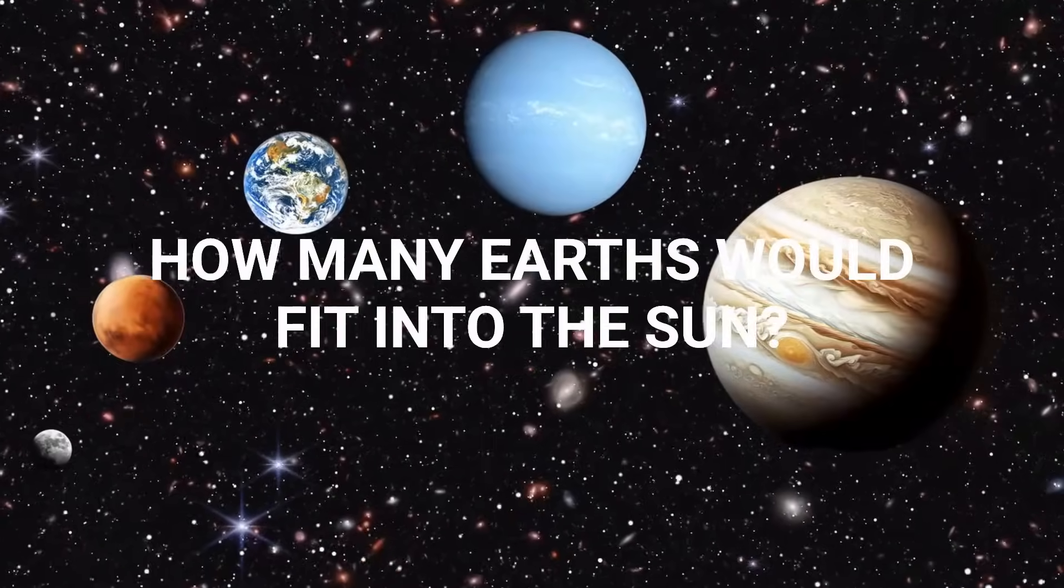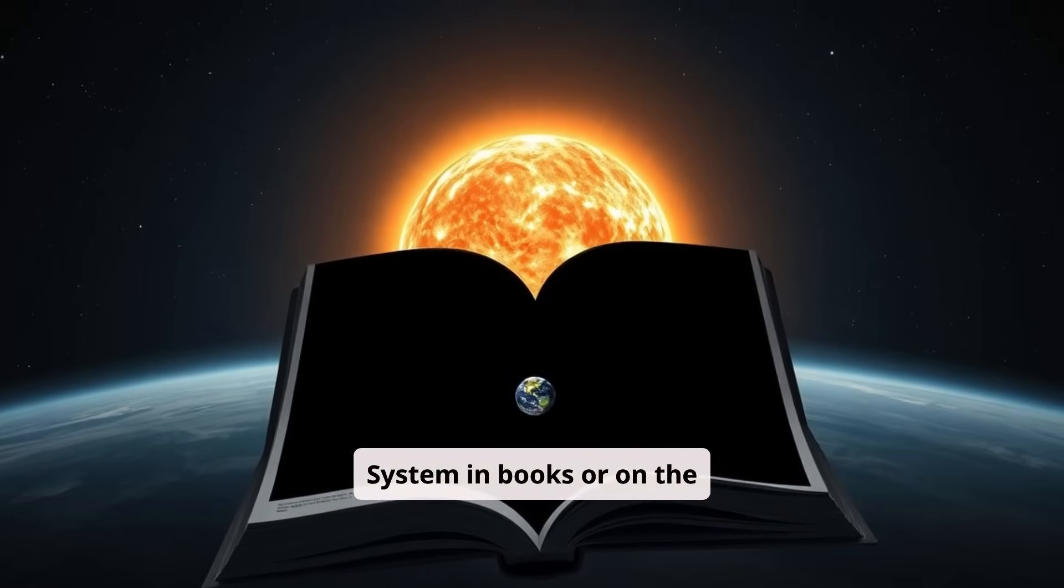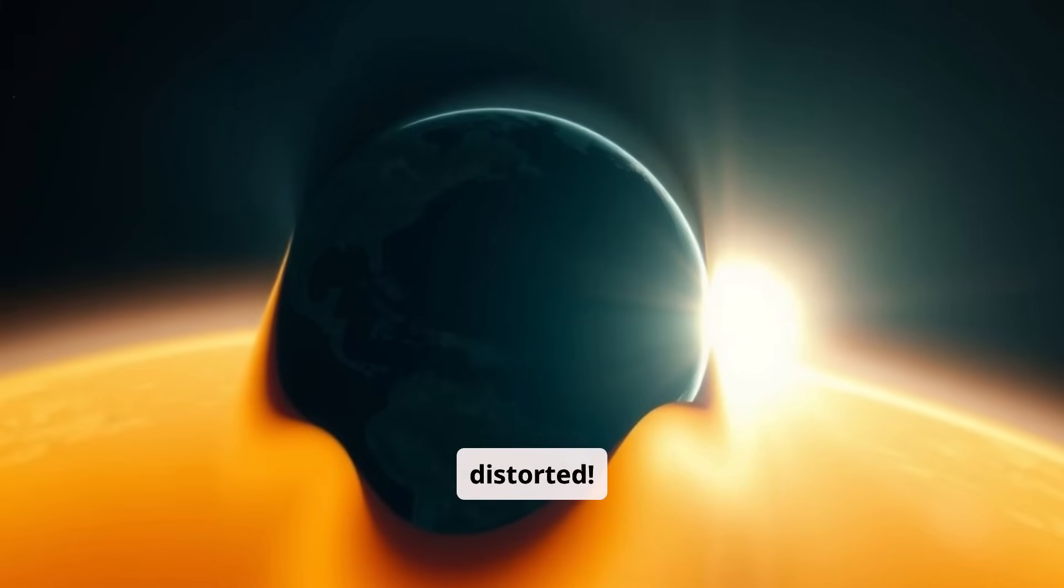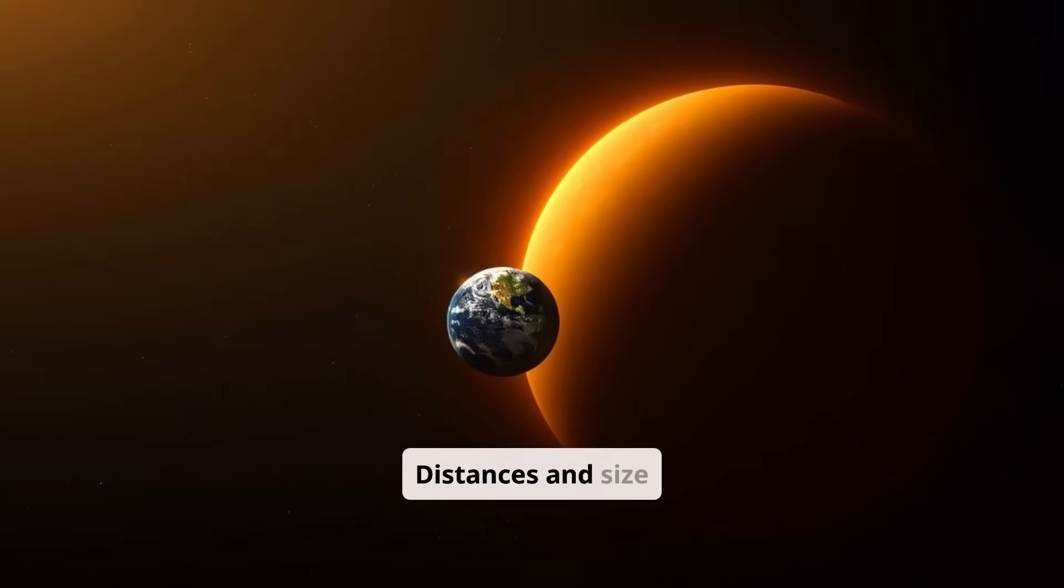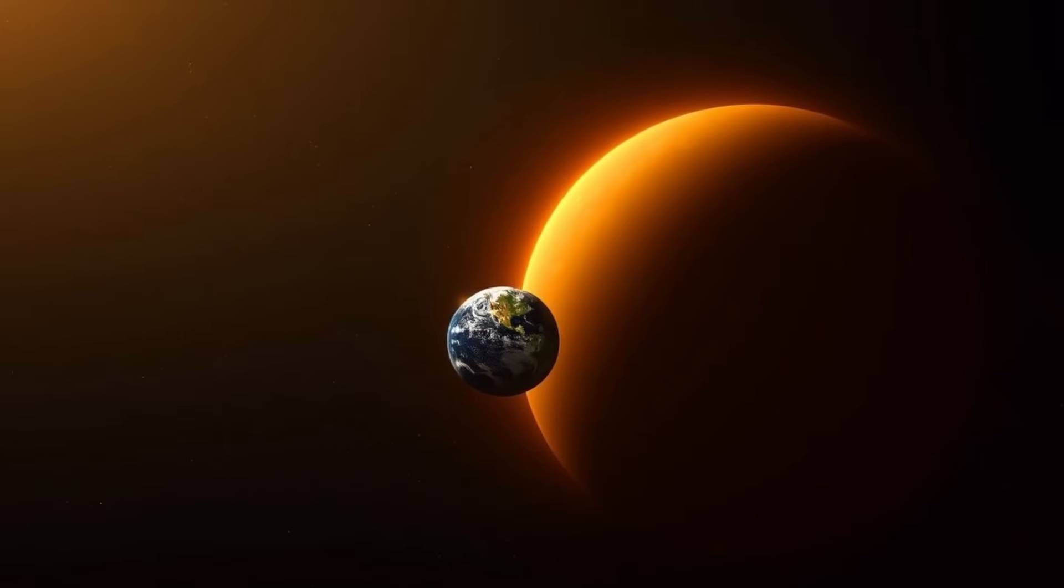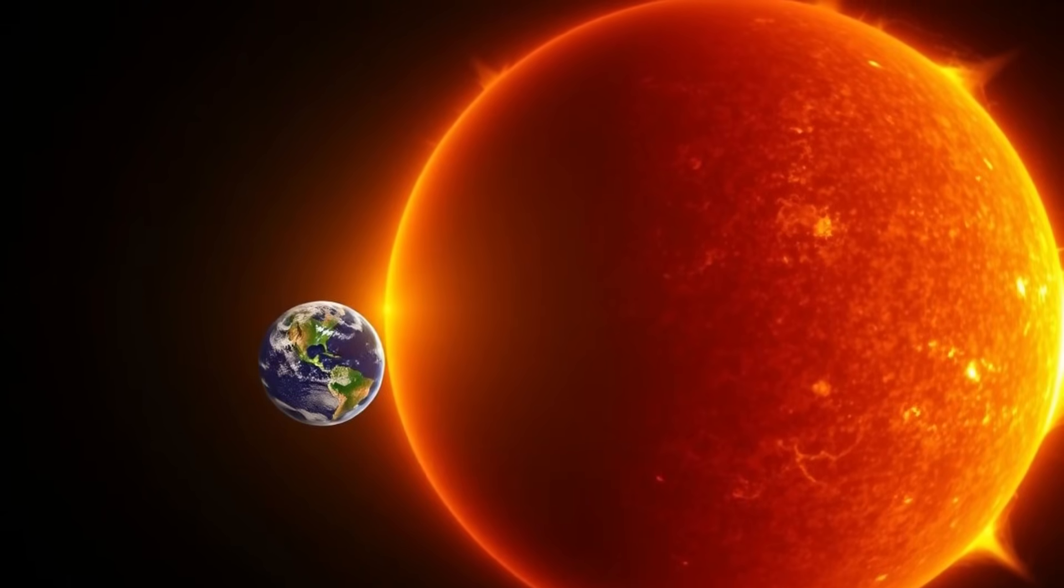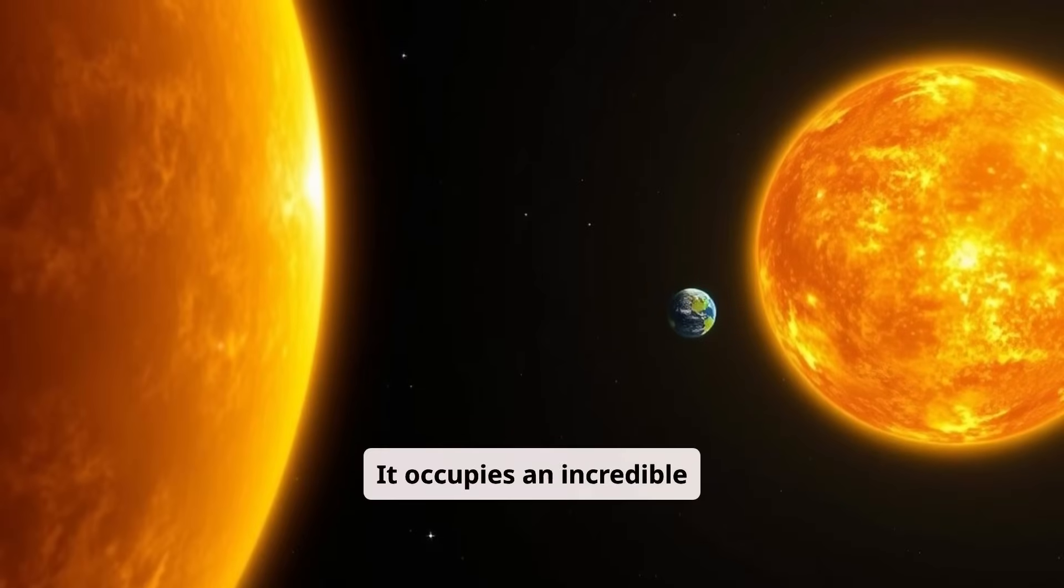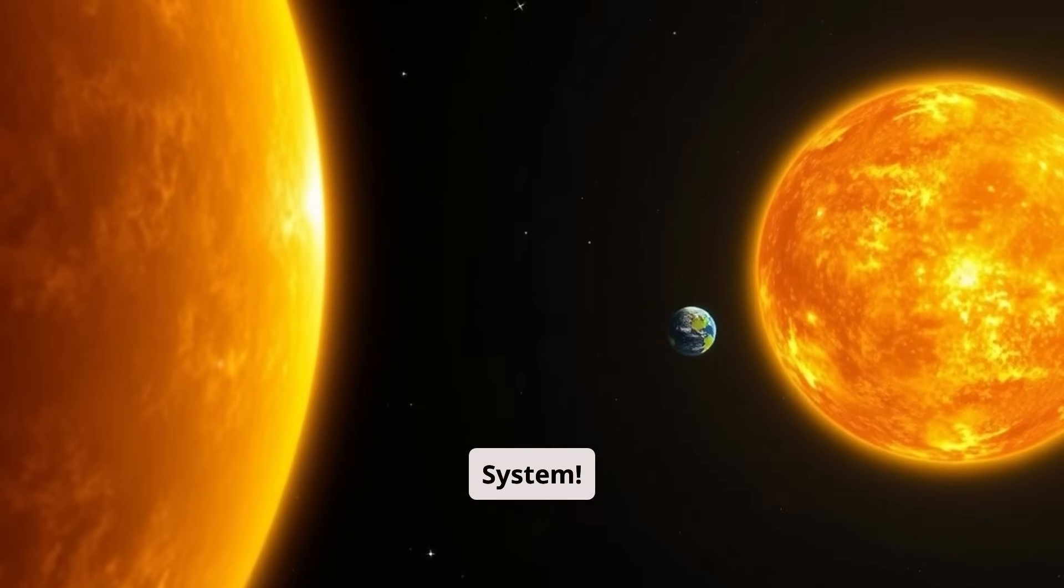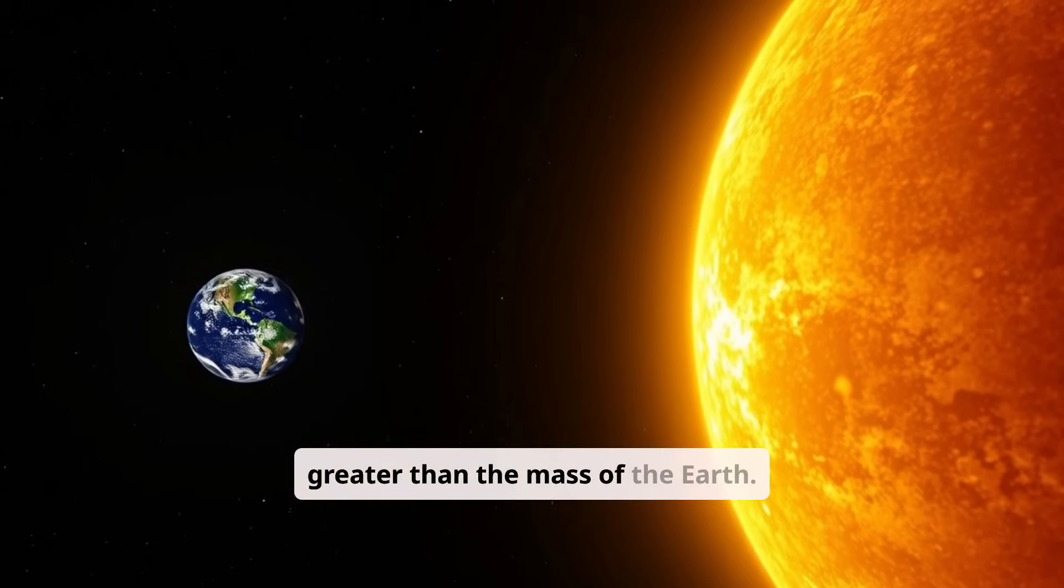How many Earths would fit into the sun? Are you looking at pictures of the solar system in books or on the internet? Don't forget that all of them are very distorted. Distances and size differences between the bodies are actually many times greater. The sun is gigantic compared to the other planets. It occupies an incredible 99.86% of the mass of the entire solar system. The mass of the sun is about 330,000 times greater than the mass of the Earth.